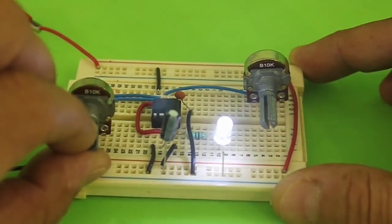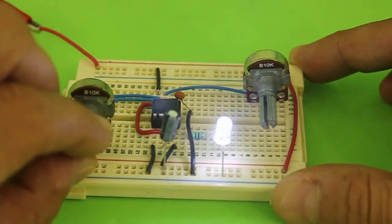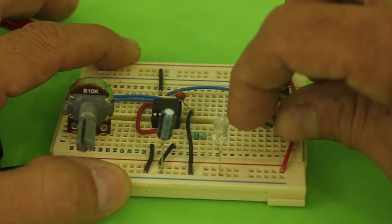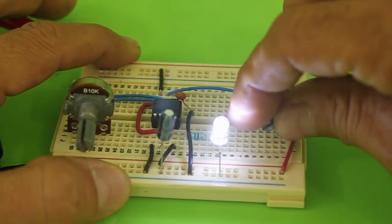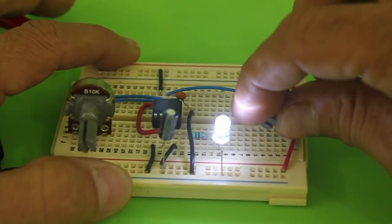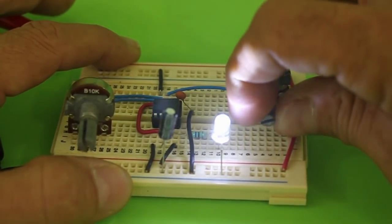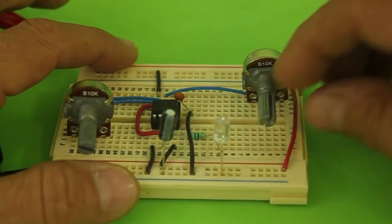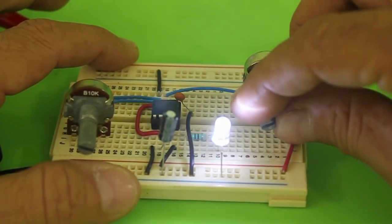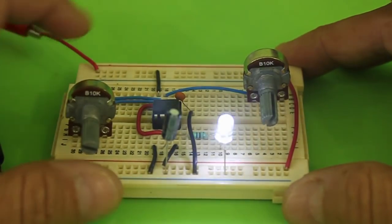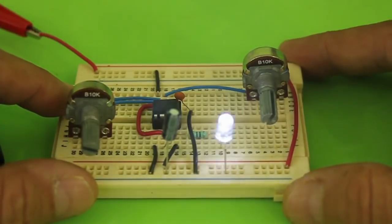So we can control it by moving the potentiometer, and also with the other we can also change the rate of flashing. So adjusting the two potentiometers, we can have control over the on and off times of the LED.